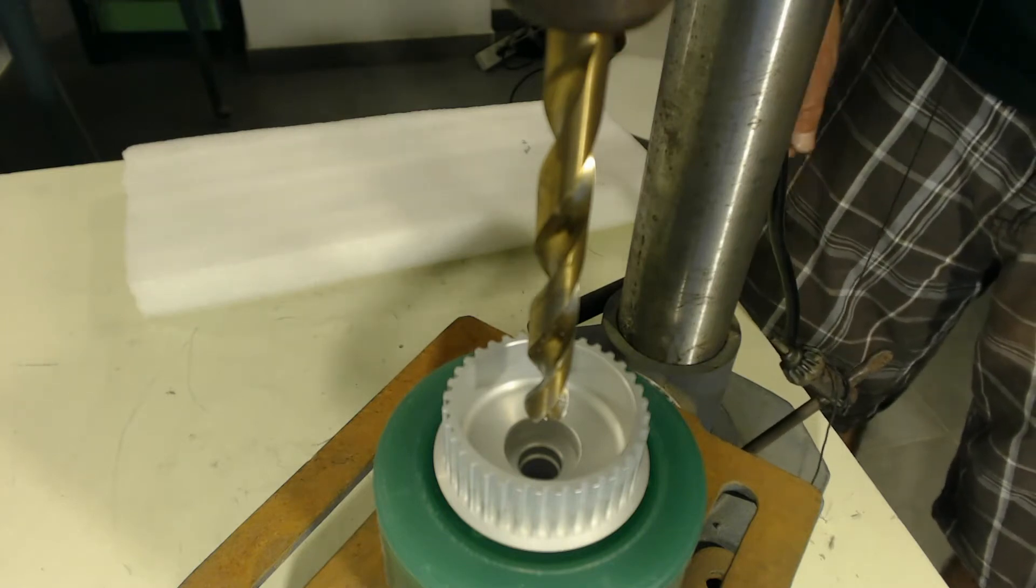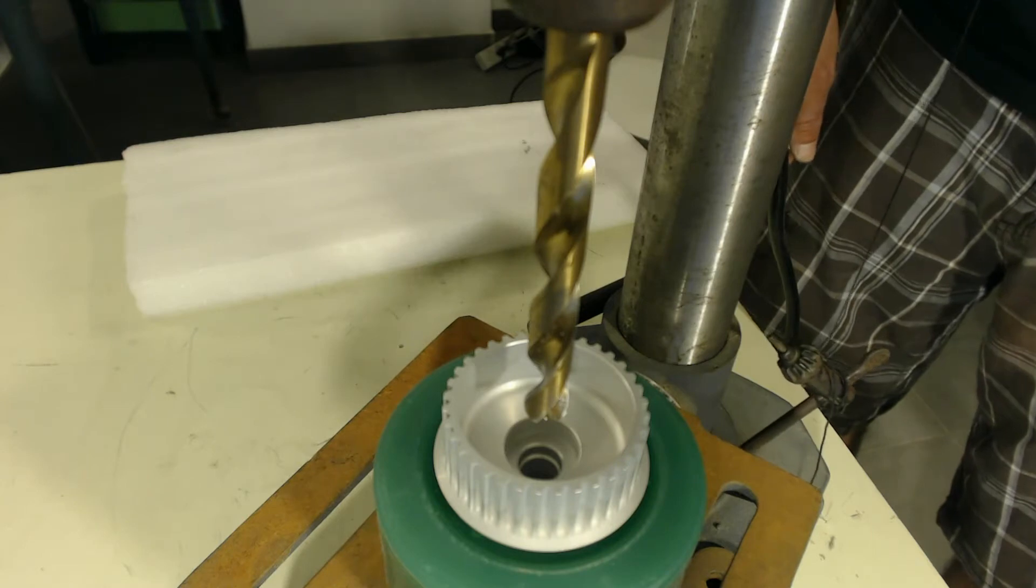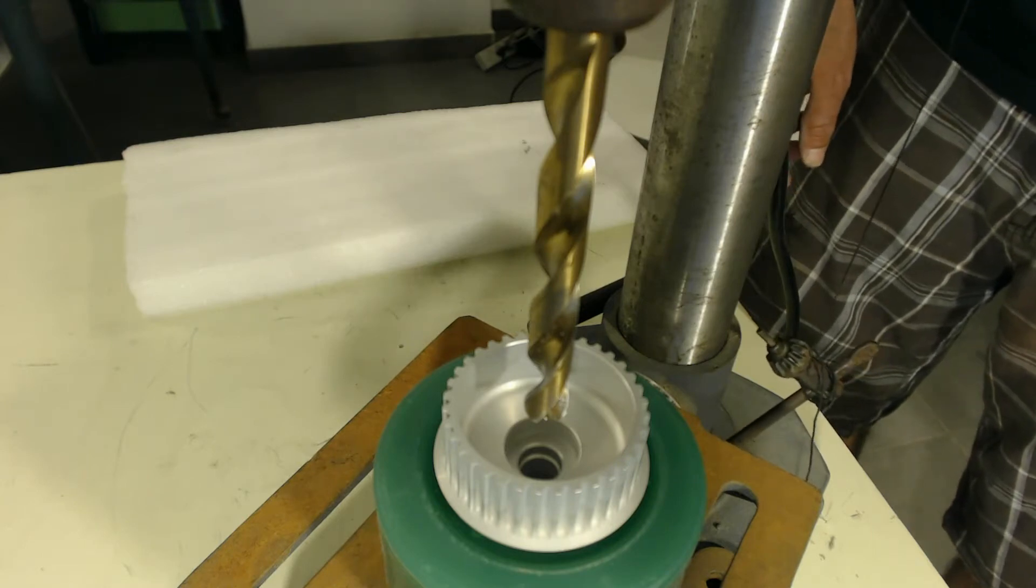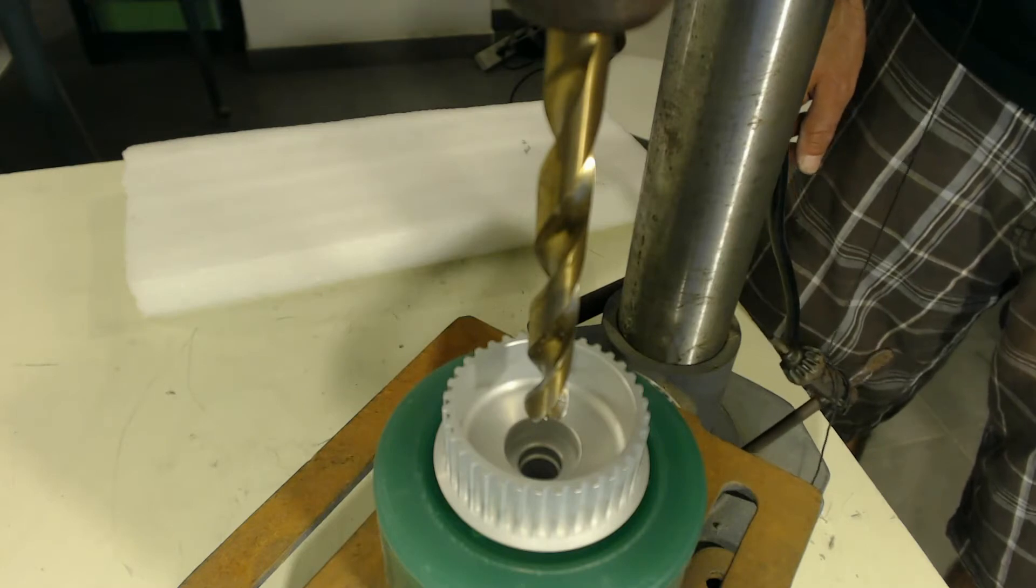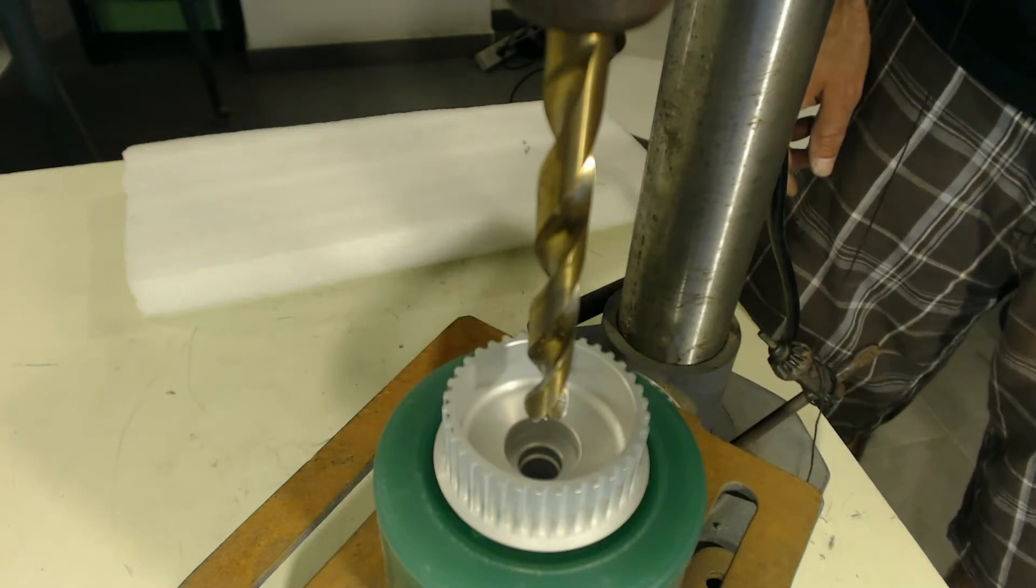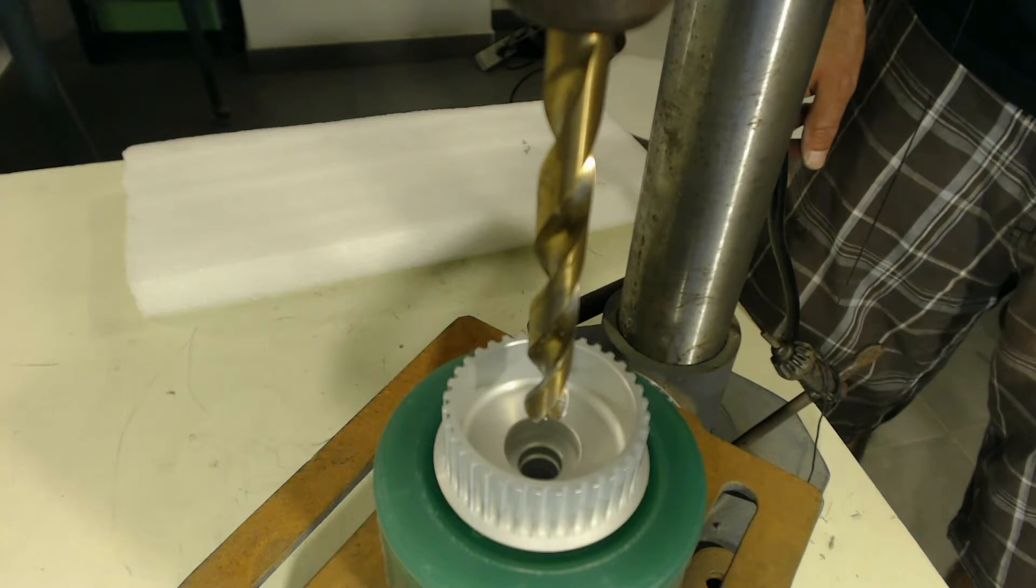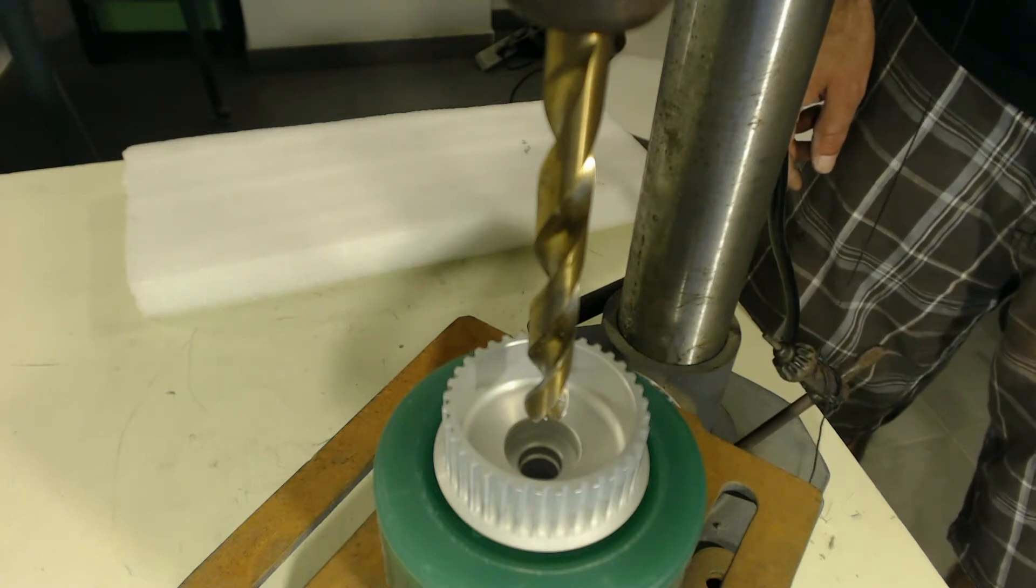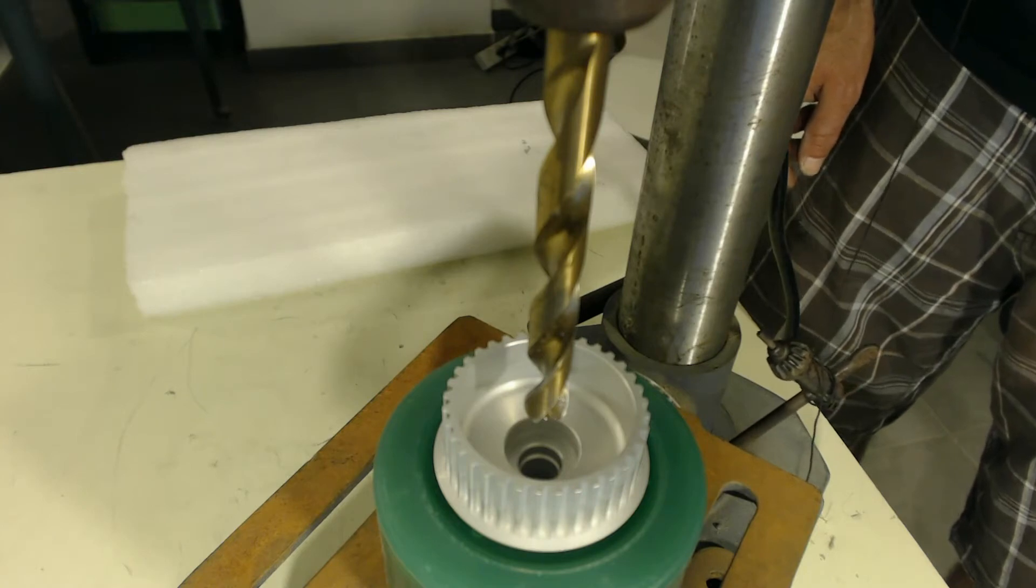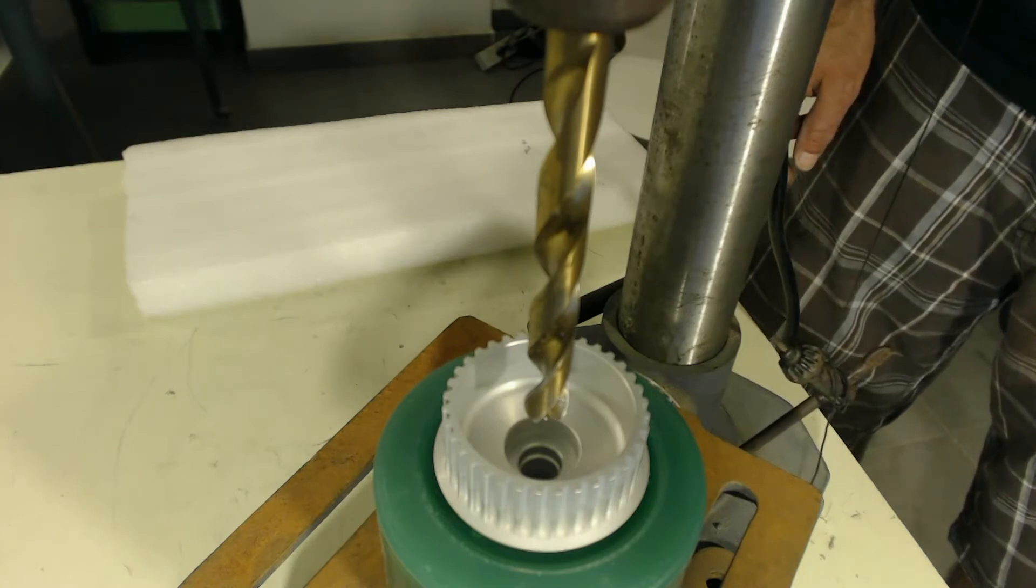And basically we need to drill this out to a half inch drill size, but unfortunately you can't do it with one step, so you need to step it and do it in two steps. So basically what we're going to do is use a 15-32 inch drill bit first, and then we're going to go to the half inch after that just so it doesn't bind. So definitely do it in two steps to make sure this thing doesn't bind as you're drilling.